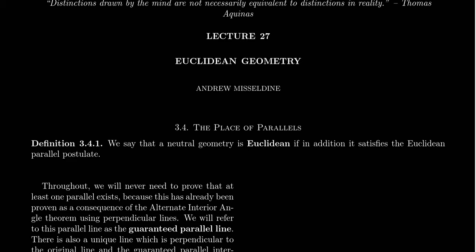Welcome back, everyone, to our lecture series for Math 3130, Modern Geometries at Southern Utah University. This lecture is Lecture 27 in our series entitled Euclidean Geometry, and it is loosely based upon Section 3.4, The Place of Parallels, in the textbook Roads to Geometry by Wallace and West. Welcome back to all my students and also anyone else who wants to be following our lecture series.